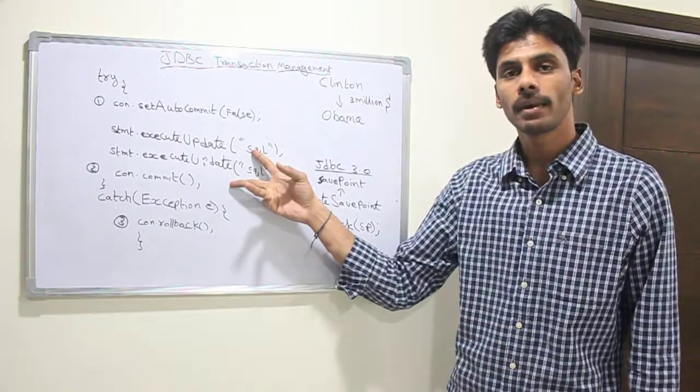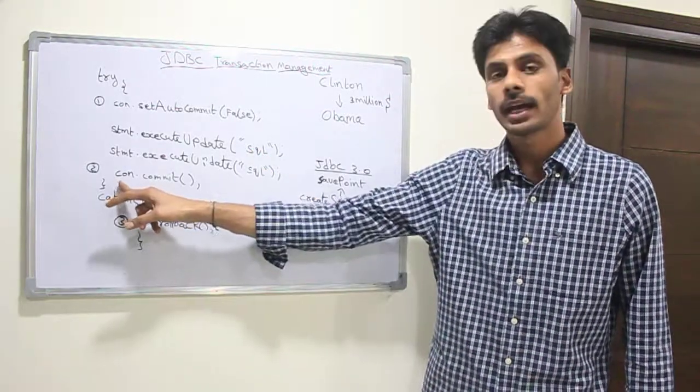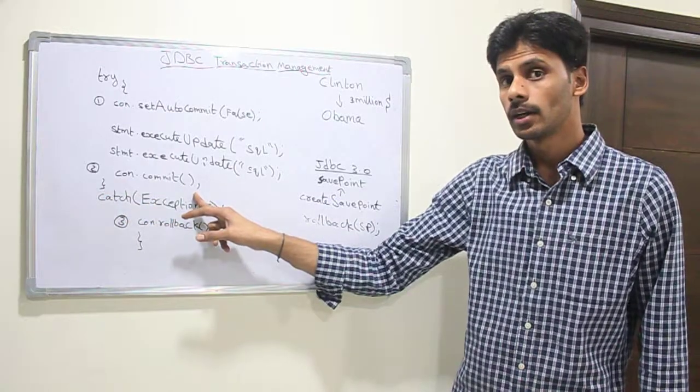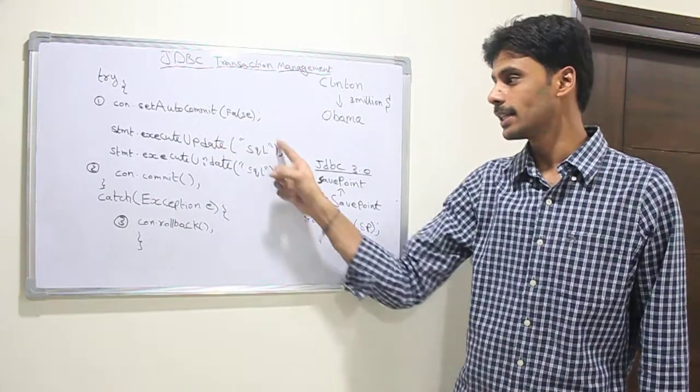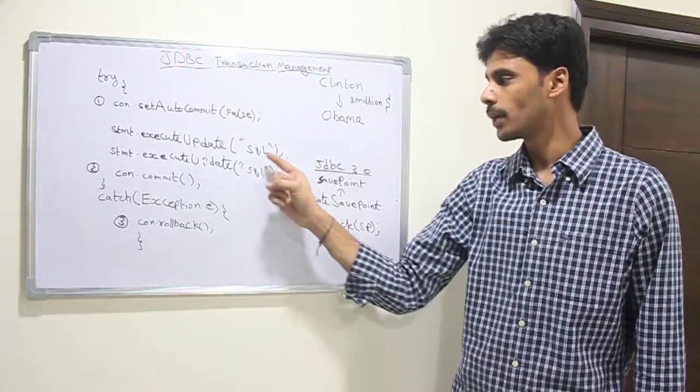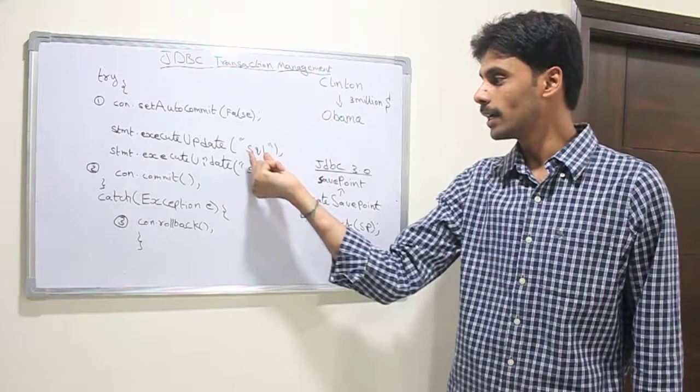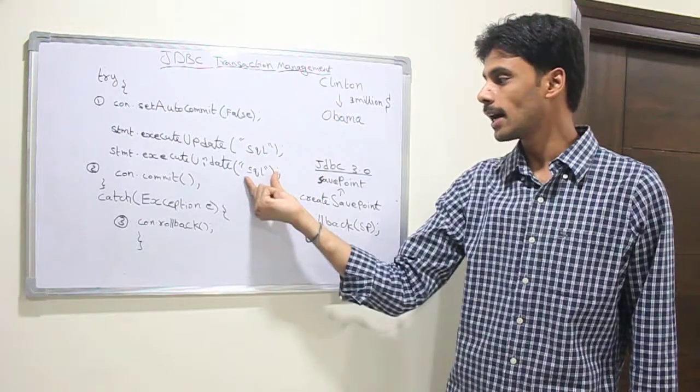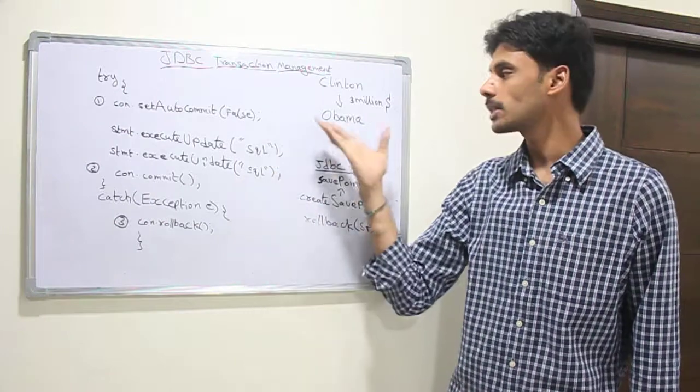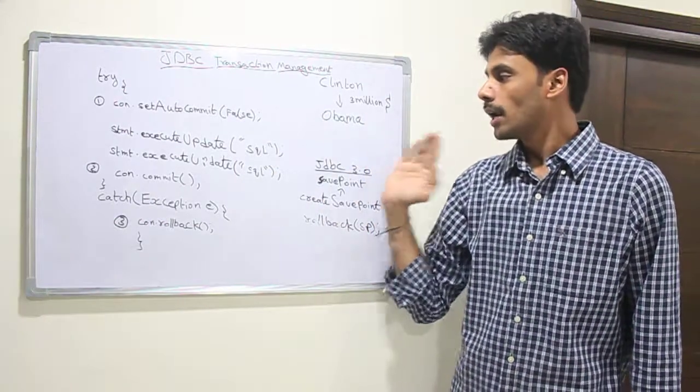They will be stored permanently only when you say connection.commit. So this way we are safe. This is not a complete code, it's just pseudo code, it doesn't have the actual SQL. Assume that this is the update that's deducting the amount from Clinton's account and this is the update DML statement which is adding amount to Obama's account.